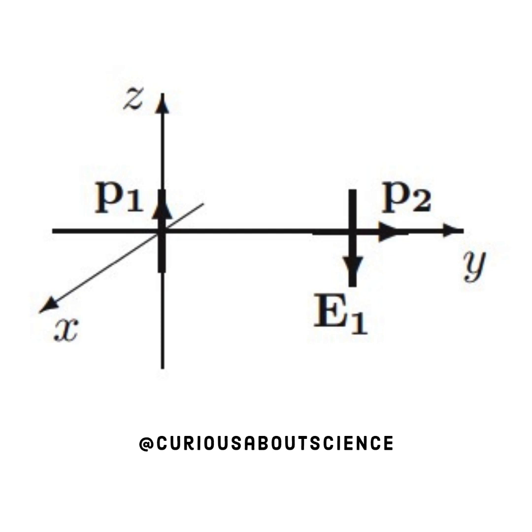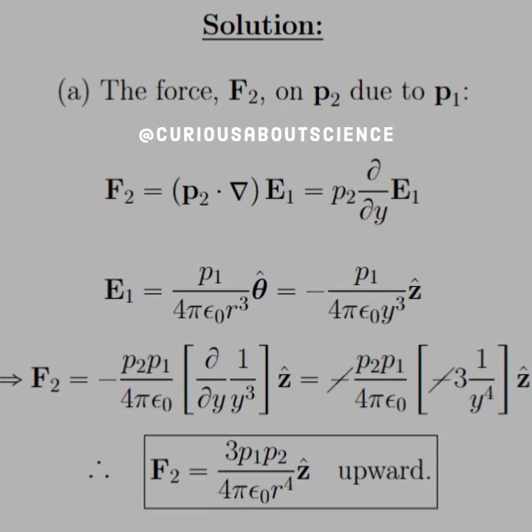For our first part in part A, we want the force of P1 onto P2, so we need the electric field of P1. We orient the origin such that P1 is at the origin and P2 is on the y-axis. We know that based on P1, E1 points down in the negative z direction. So the force F2 on P2 due to P1 is equal to P2 dotted with the del operator multiplied by the electric field from P1.